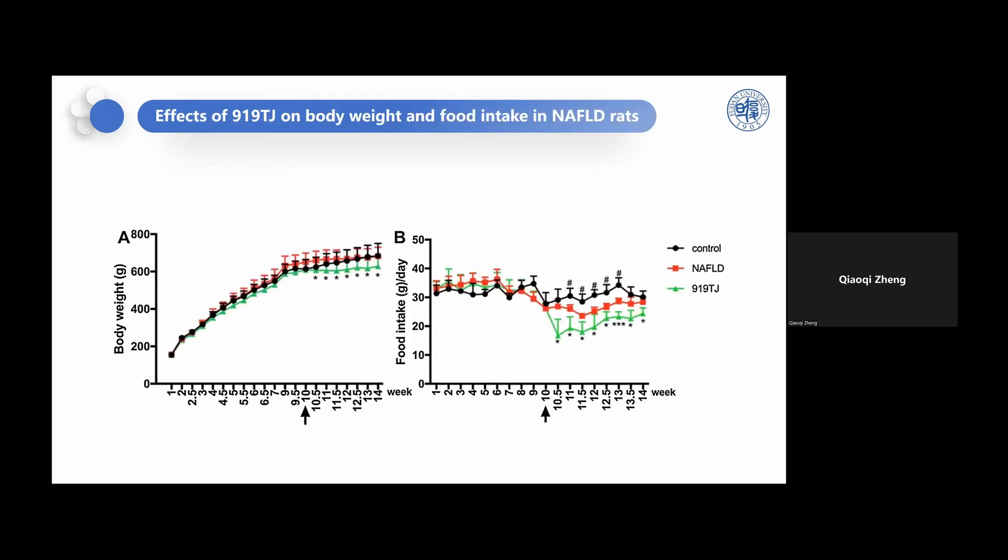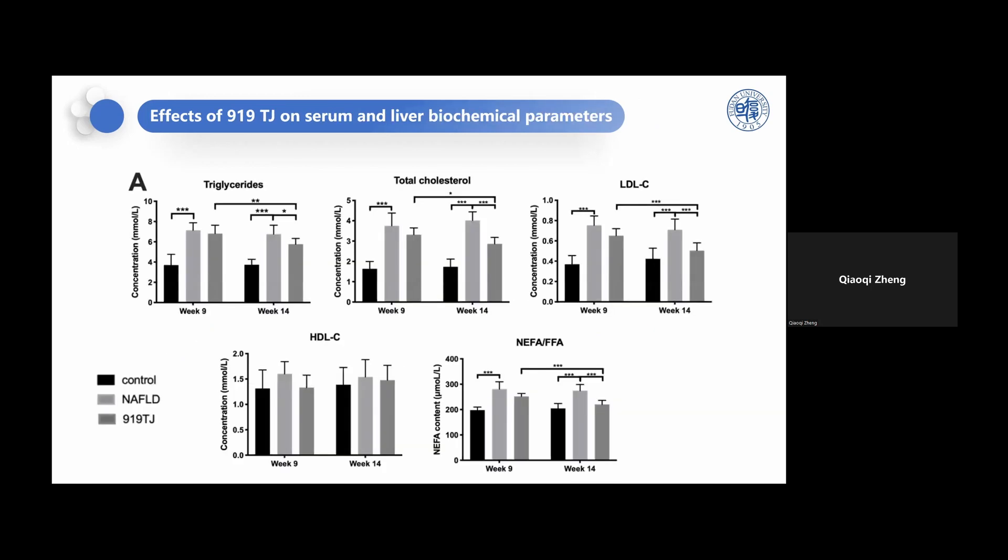As we can see, from week 10 to week 14, the mean body weight of the rats in the TJ group were obviously lower than that in the model group. Also, after medicine treatment, the mean food intake was lower than that in the model group.